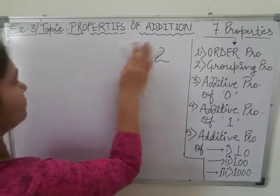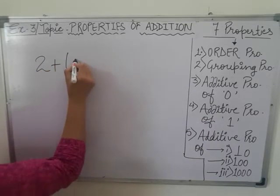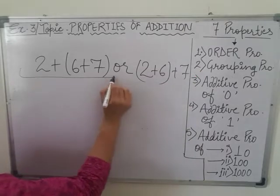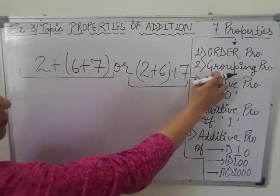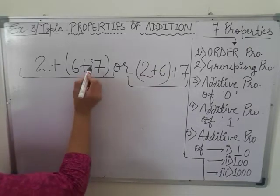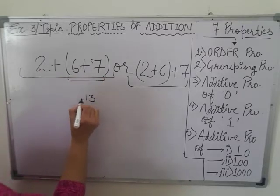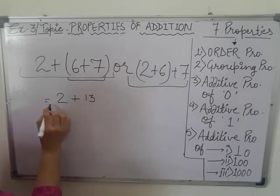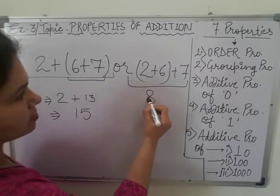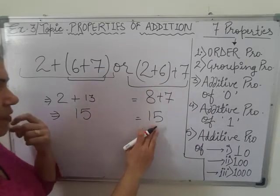Second property is grouping property, or you can say associative property. According to this property, if we are having 2 numbers or more than 2 numbers, then we group them. First, we are adding the second and third number and then we are adding this sum to the first number. So 6 plus 7 is 13 and we are adding this 13 to 2, so we are getting 15. Similarly, for the other grouping: 6 plus 2 is 8 and 8 plus 7 is 15. So in both conditions, we can see the answer will remain similar. This is known as grouping property.